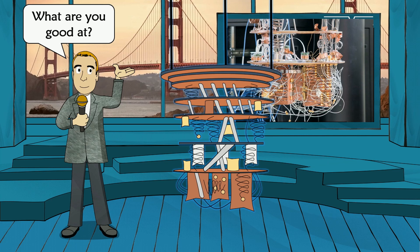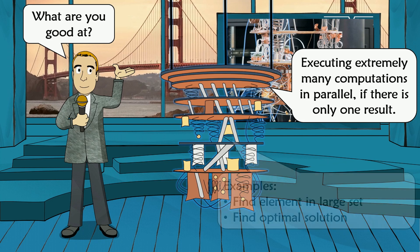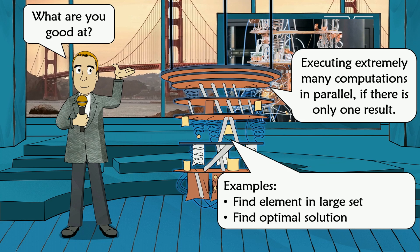So what is a quantum computer good at? It's good at executing extremely many computations in parallel, but only if there is only one result. Because as I said, most of what's going on is lost at the moment when you look at the value of the content of a quantum register — everything but one state gets lost. Examples include finding an element in a large set or finding an optimal solution if many solutions exist.